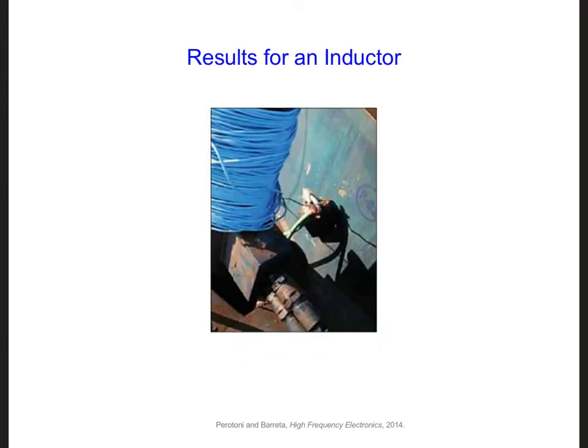Finally, here is a picture of the inductor that they implemented at the base of the crane. They took 85 meters of cable with a cross-sectional area of 2.5 millimeters squared and wound it around the hydraulic jack of the crane. The hydraulic jack, which is made of steel, acted as the ferrite core of the inductor.